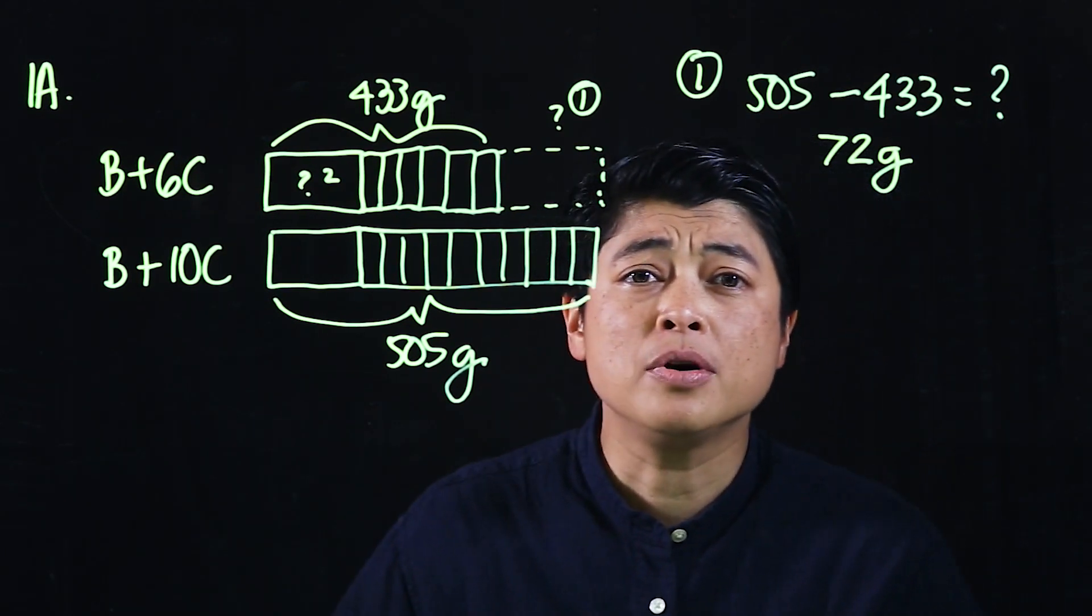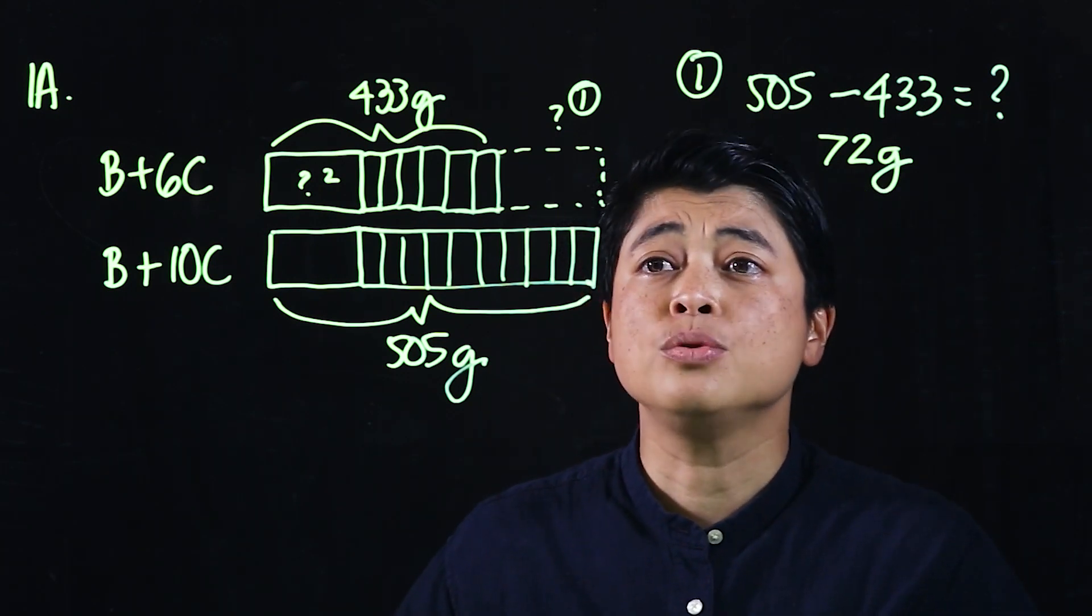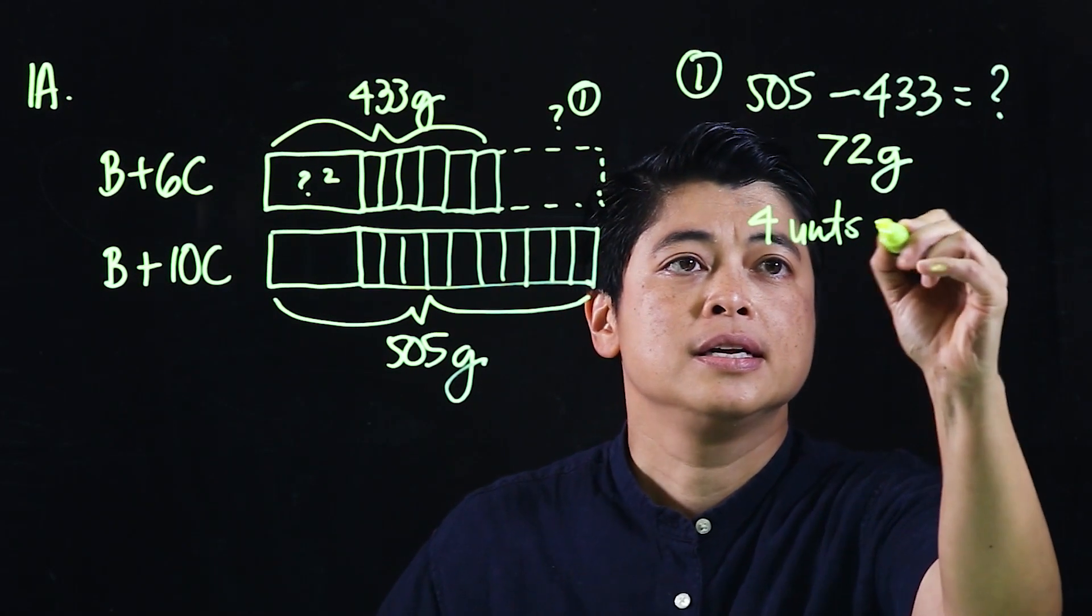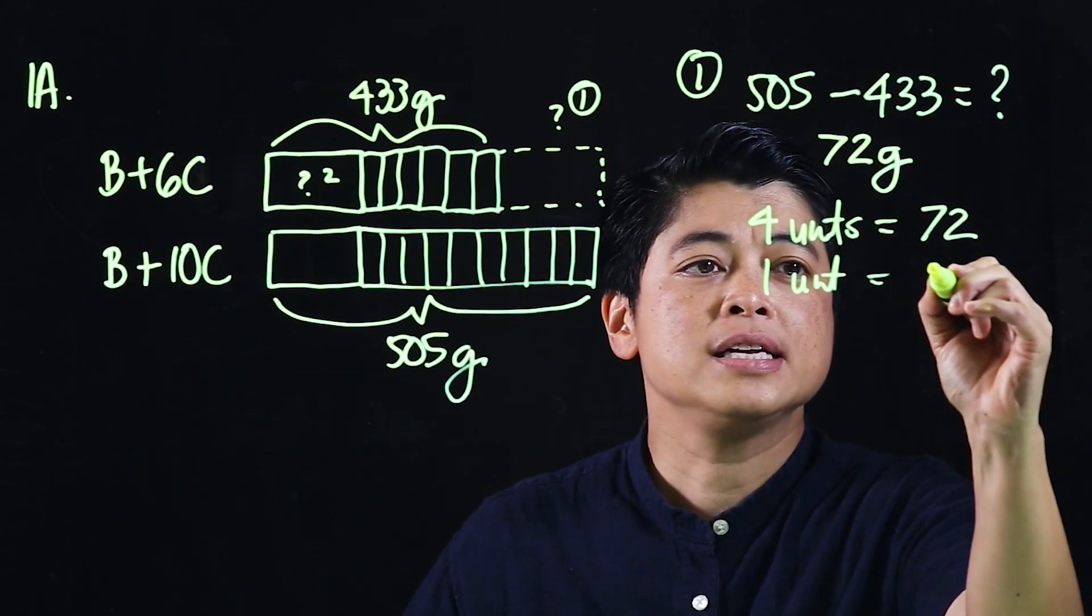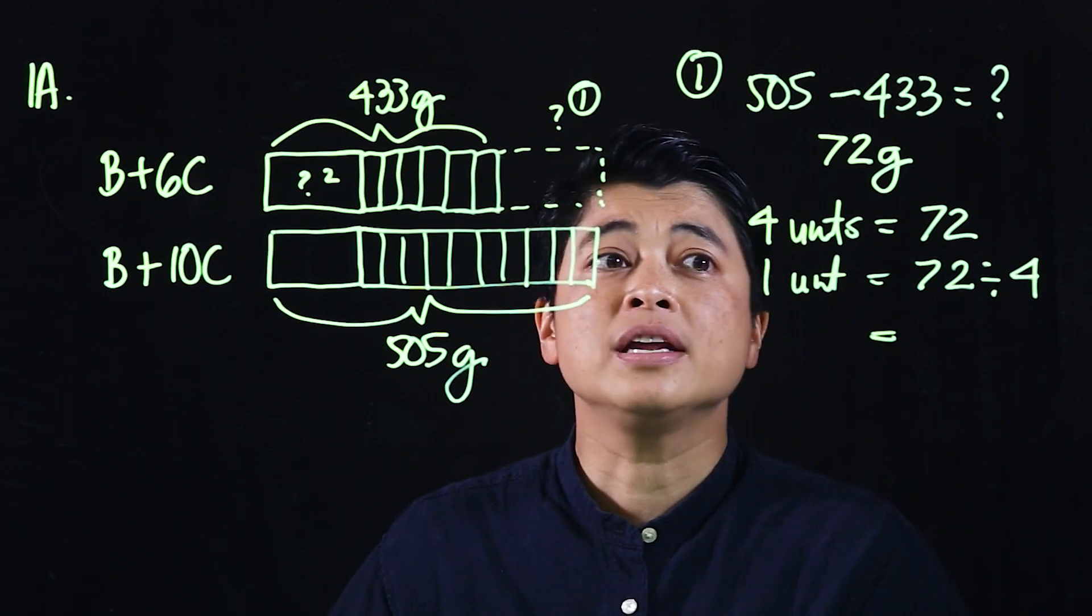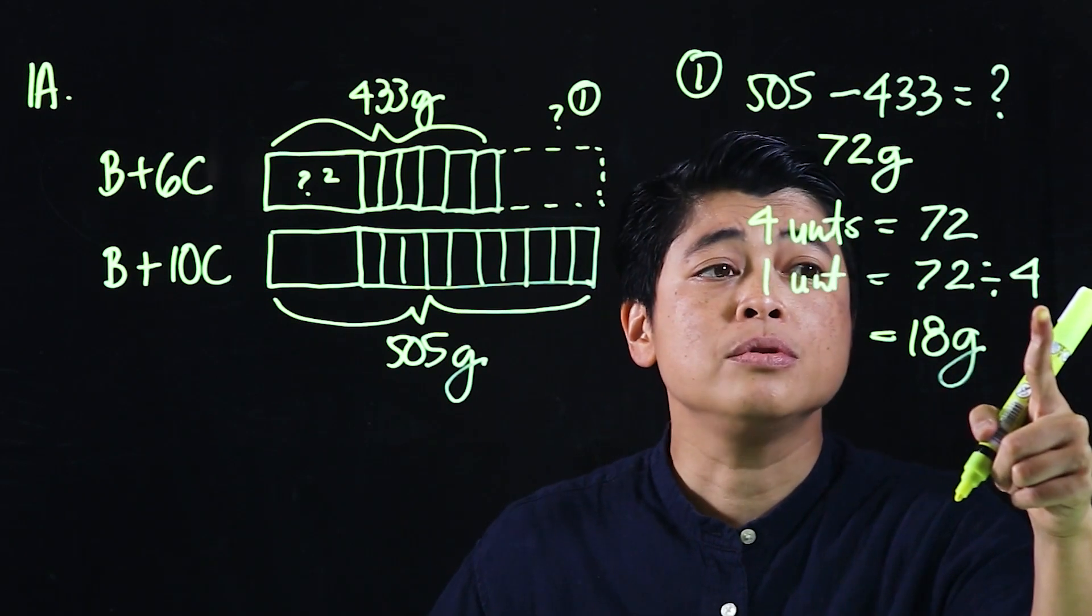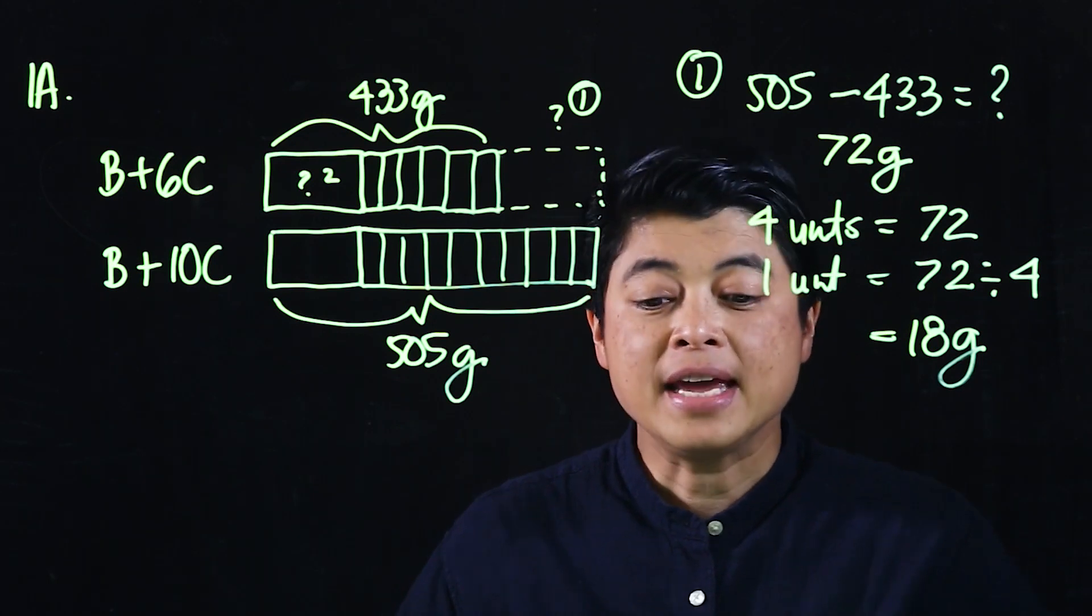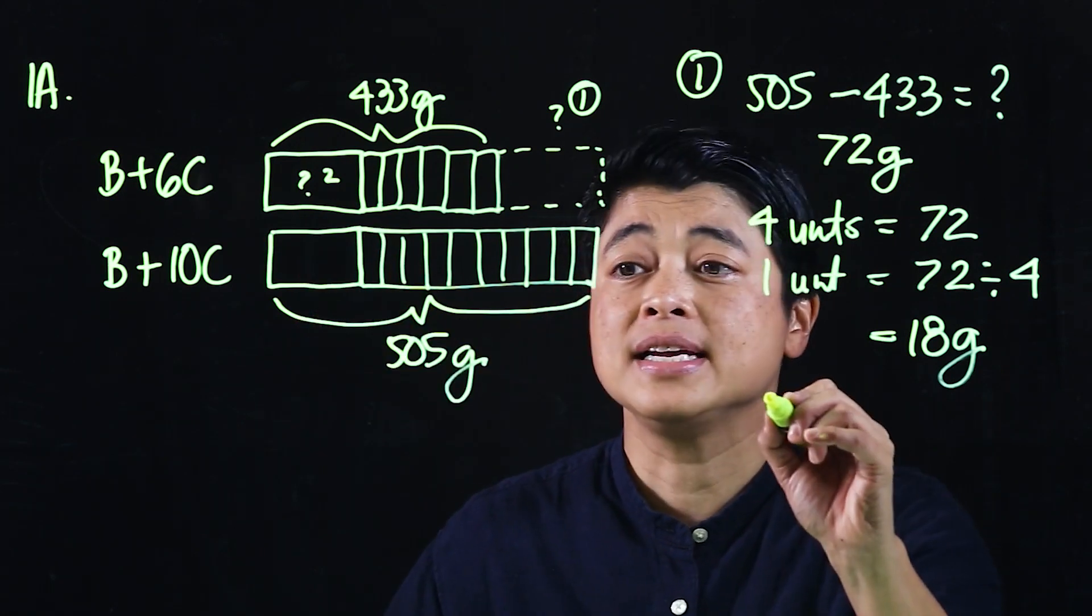The problem also has lead-on questions. After we find the 72 grams, it says four units is equal to 72, which means one unit is equal to 72 divided by 4, which means one unit of cookie must be 18 grams. So put in your calculator, 72 divided by 4 would have given 18. One unit of cookie must be 18.